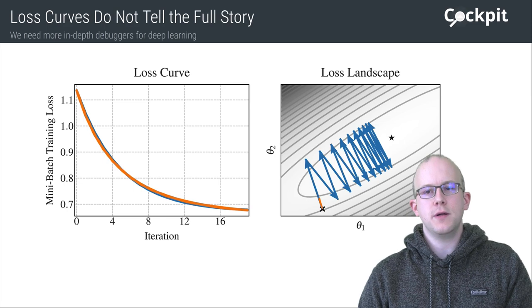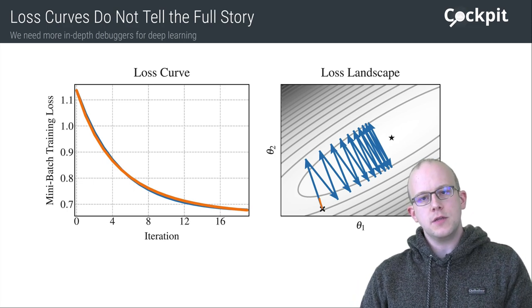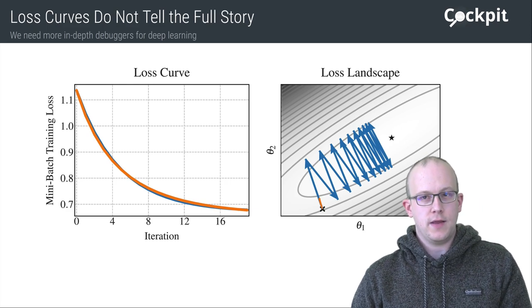For deep neural networks with millions of parameters, it is impossible to inspect these trajectories directly. But clearly, we need tools that provide a more meaningful status report during training than just the loss.